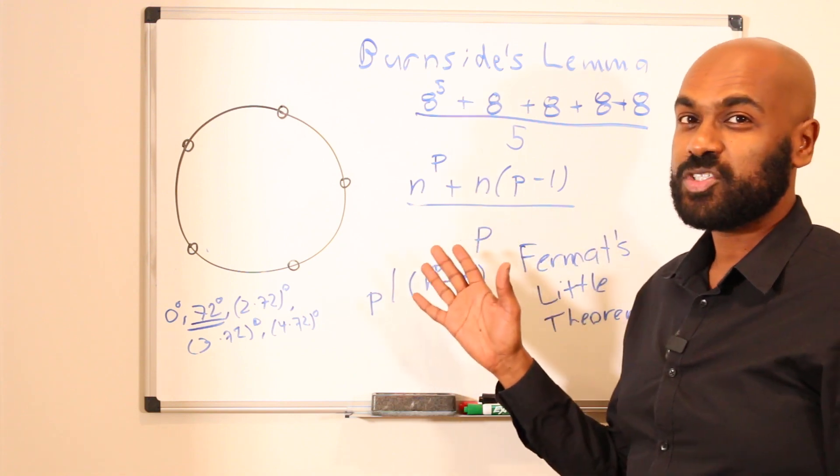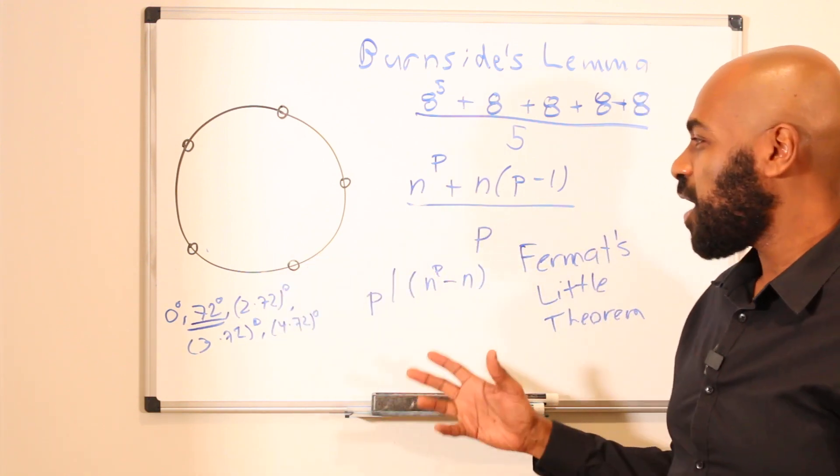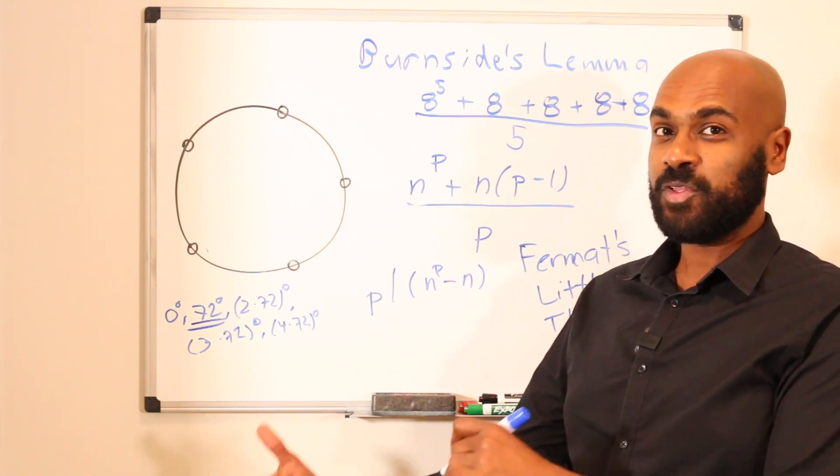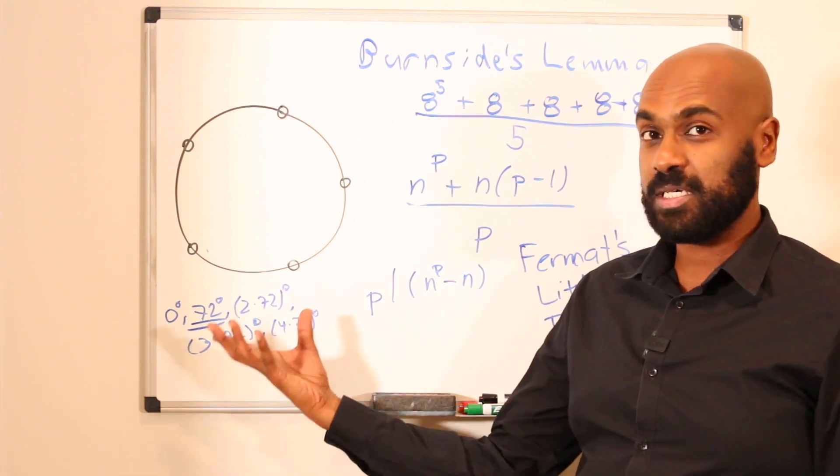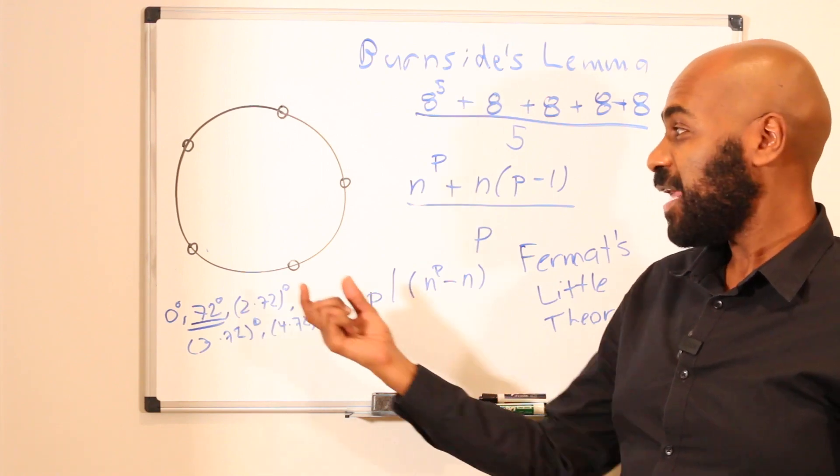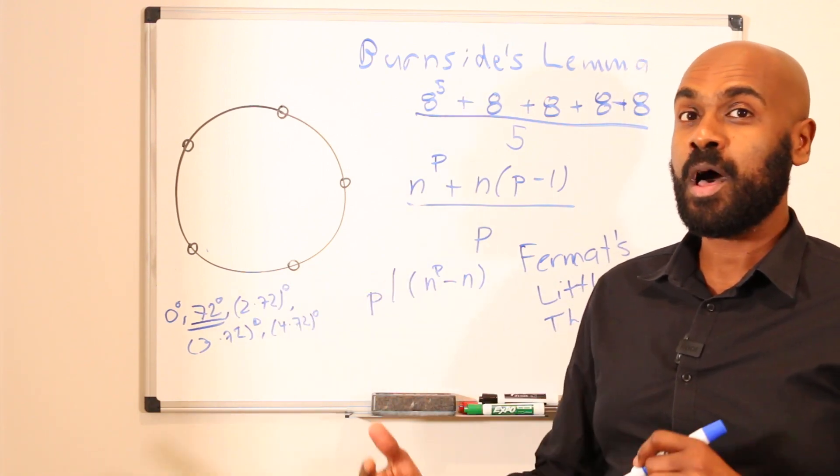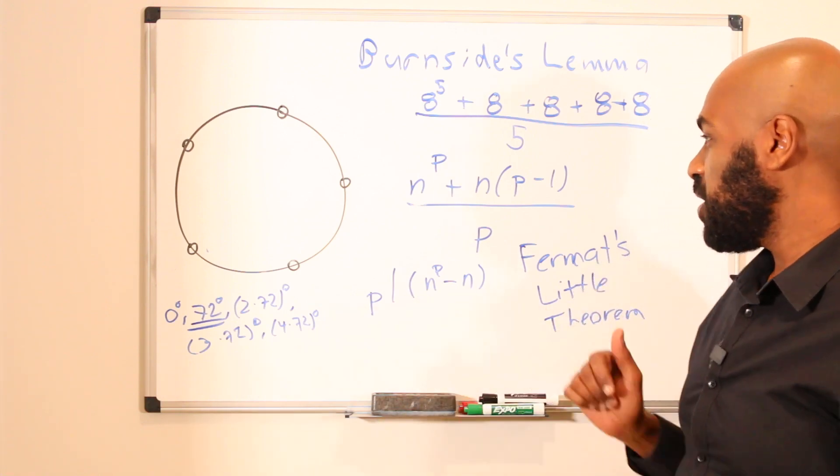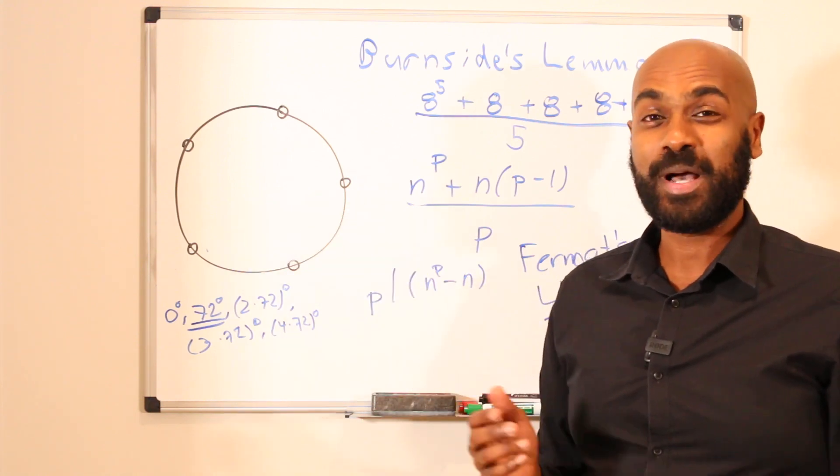So this is a phenomenon that happens quite a bit in mathematics, where one field can influence another. In particular, in this case, we have these theorems from counting, combinatorics, giving us theorems in number theory. That exchange actually happens both ways between combinatorics and number theory, and a lot of research even today. So an interesting result that comes for free from a combinatorial thing by surprise.